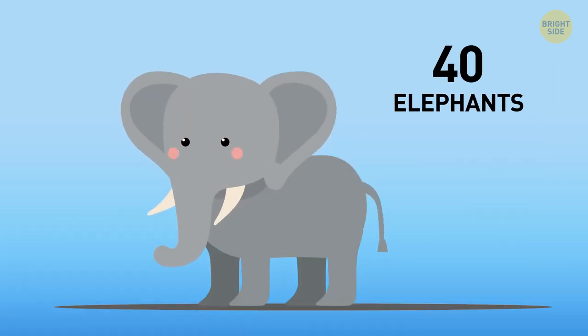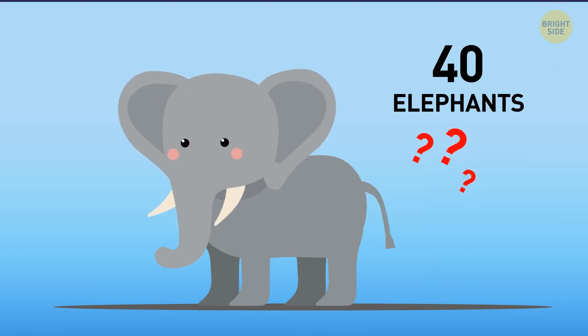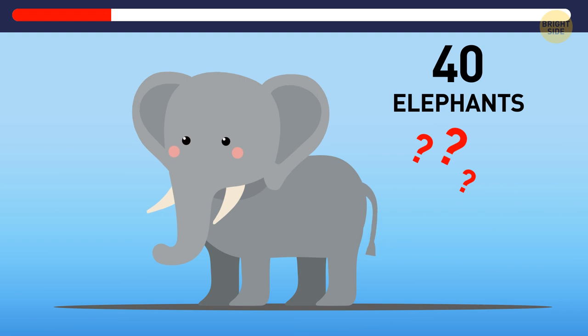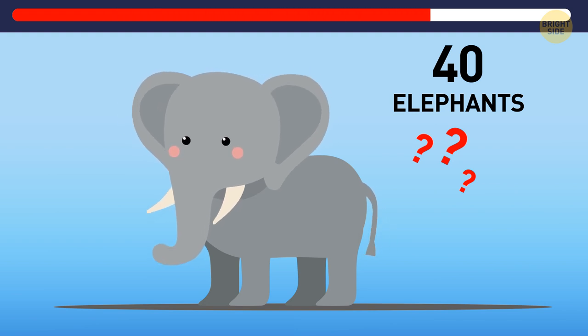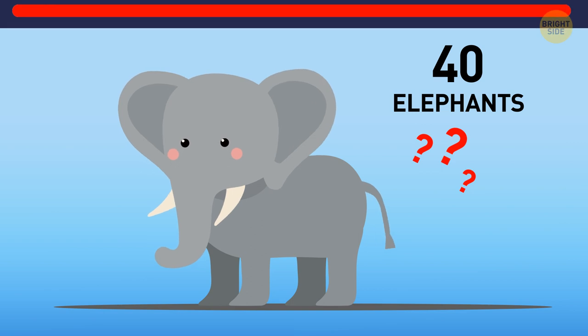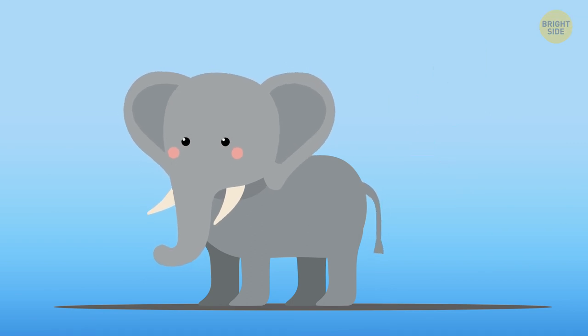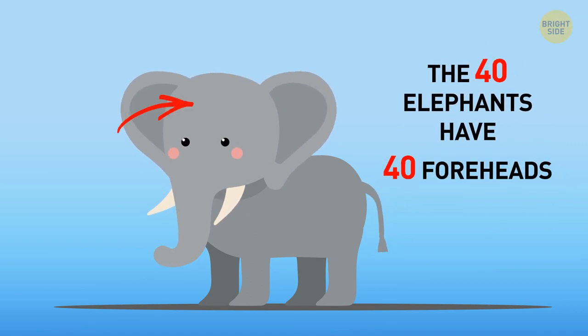There are 40 elephants. And they have 40 foreheads. How can this be possible? It's a play on words. The 40 elephants have 40 foreheads. Get it?